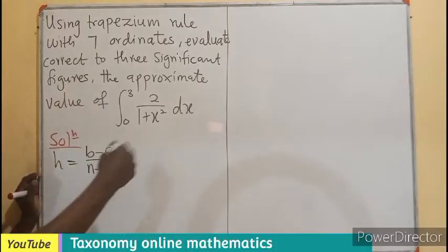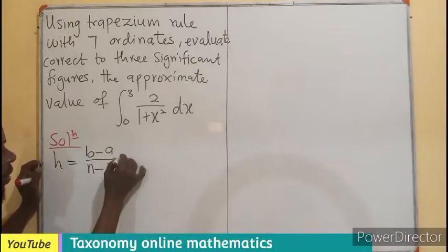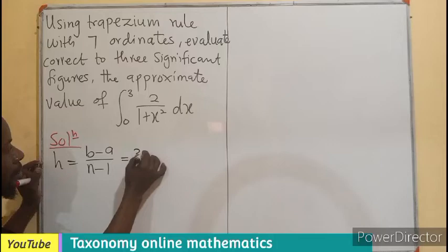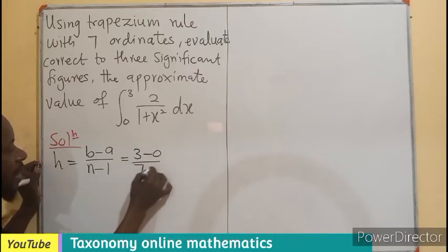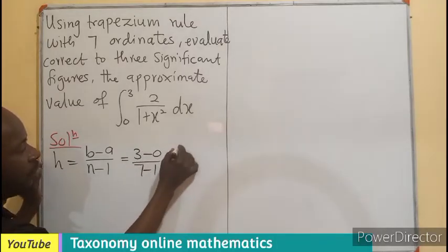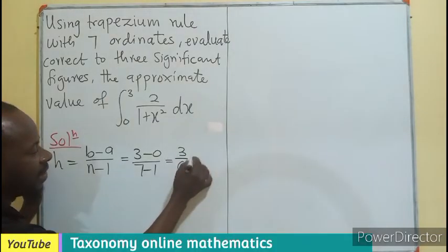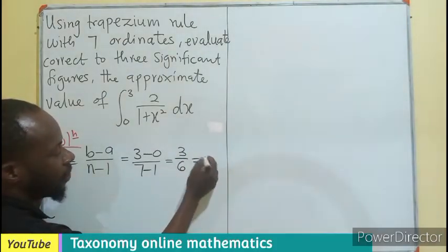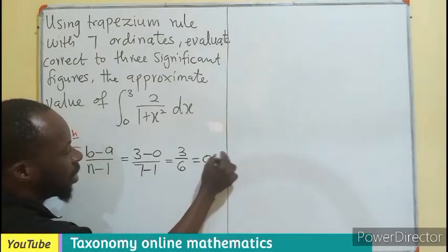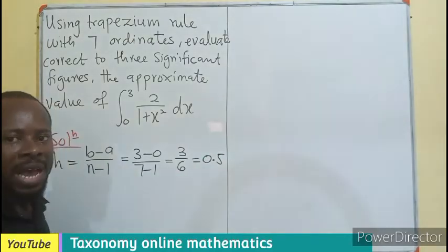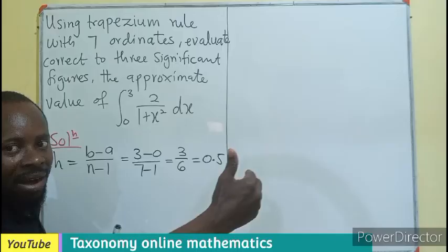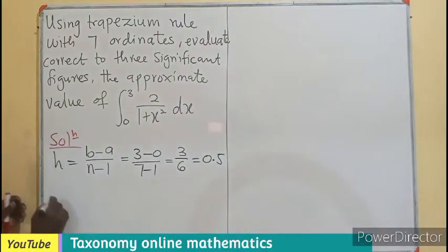What does b stand for? The upper limit. A for the lower limit. N for the number of ordinates, the number of intervals. So this could be 3 minus 0 divided by 7 minus 1, which is 3 over 6, that would be 1 over 2 or 0.5.